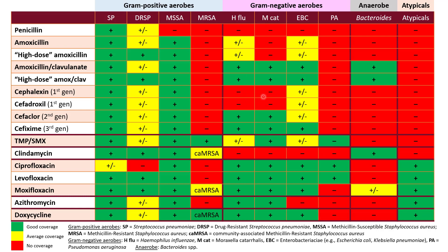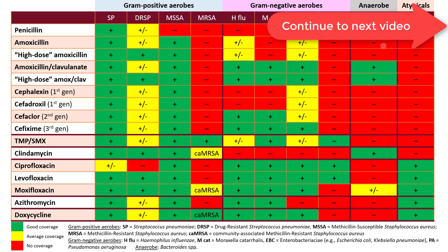Those beta-lactamases will also break down first-generation cephalosporins, but second- and third-generation cephalosporins are stable against those beta-lactamases and will have good activity. Trimethoprim-sulfamethoxazole does not have reliable activity against Haemophilus influenzae. Clindamycin has no activity against any gram-negatives. When it comes to atypical coverage, only fluoroquinolones, macrolides, and tetracyclines have activity against atypicals — the rest do not.